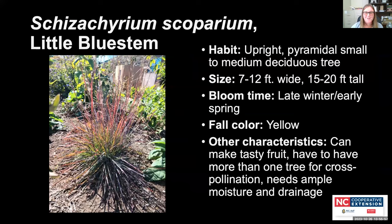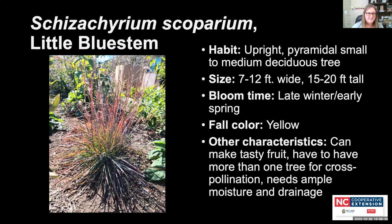Little bluestem grass: people from an agricultural background might call it a weed, but Amanda loves the fall color — the entire spectrum from yellow to purple on one plant. There are some really great selections of little bluestem, including some that are so glaucous they almost look white. It's a really great plant, especially as it starts changing colors in fall.